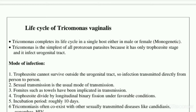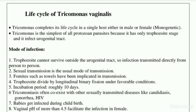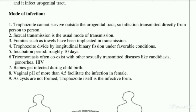The word urogenital means: 'uro' is related to excretion, and 'genitalia' is related to the reproductive system. So the tract that includes both of these systems is called the urogenital tract. This is the parasitic protozoan which infects the urogenital tract.